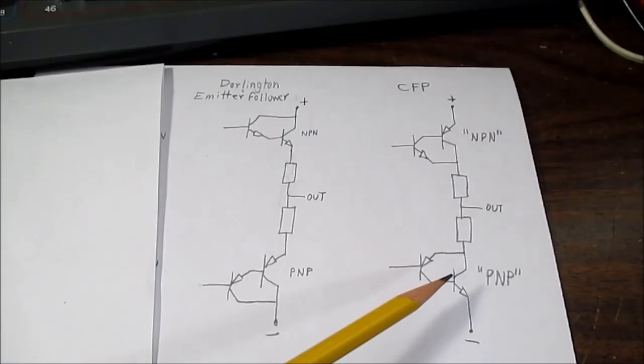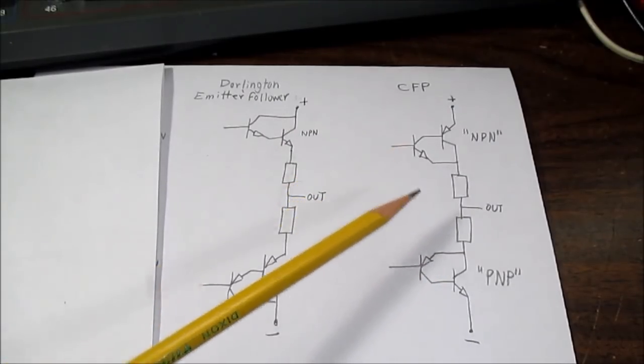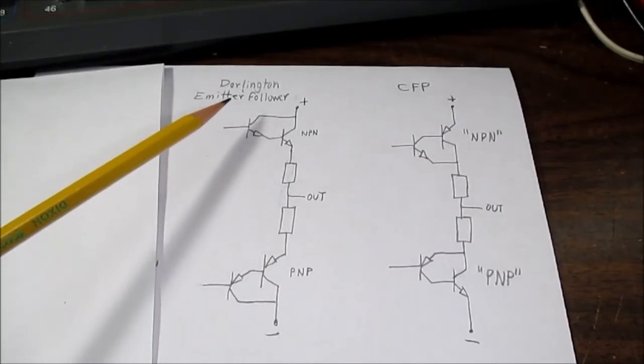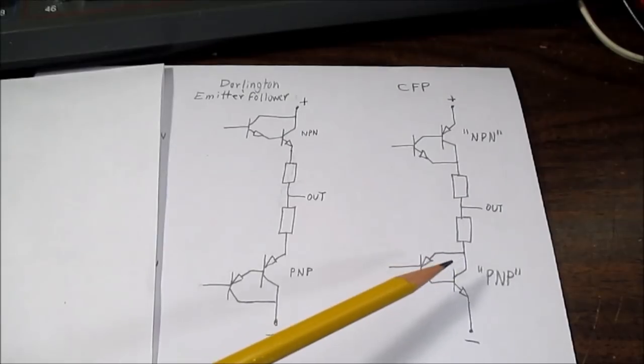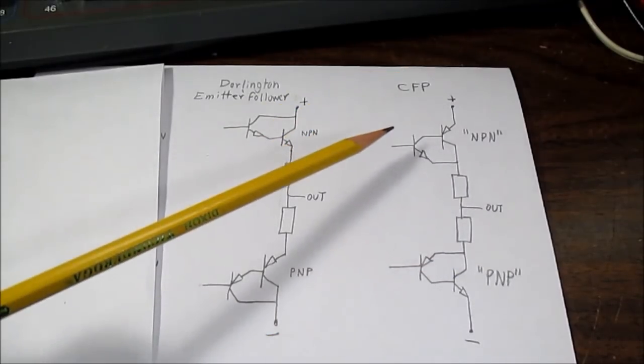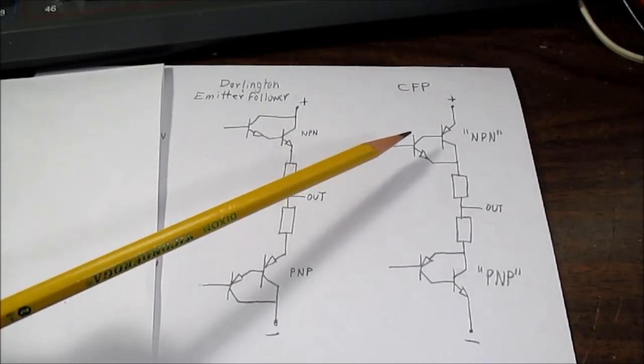So, some designers favor this circuit a lot more. For example, Rod Elliott on ESP, he says, Why would we even use this Darlington configuration when this is so much more linear? This circuit also has better thermal stability.